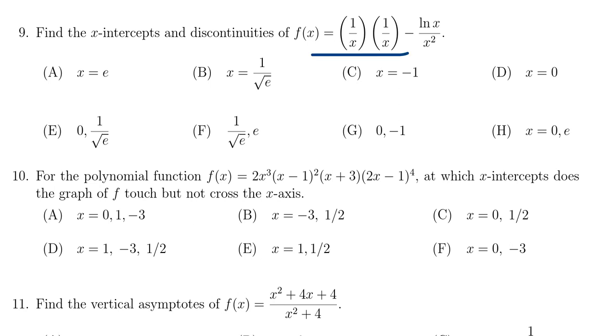We're given a function. This one looks like f(x) is equal to 1 over x times 1 over x minus the natural log of x over x squared. With this function f, we have to identify all of the x-intercepts and all of the discontinuities here.